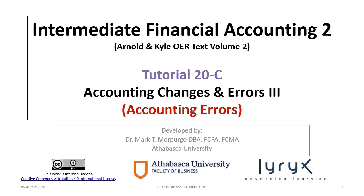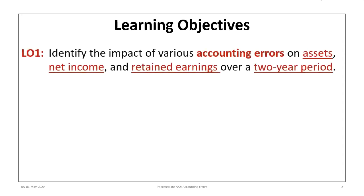Hello and welcome to Intermediate Financial Accounting 2 Tutorial 20C. This is the third and final tutorial related to accounting changes and errors. This particular tutorial focuses on the impact of accounting errors. The learning objective is to identify the impact of various accounting errors on assets, net income, and retained earnings over a two-year period.